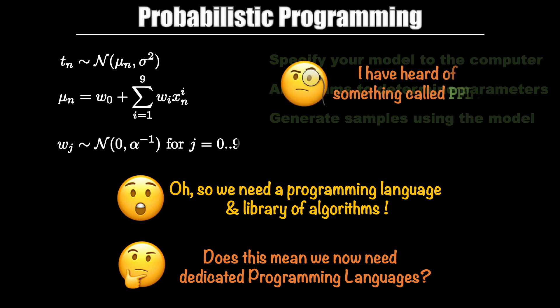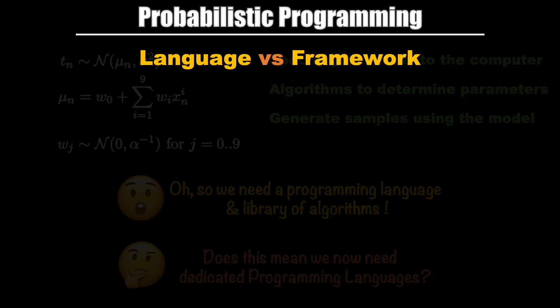In the space of probabilistic programming, one term that is often used is called PPL, which stands for Probabilistic Programming Language. But before I go any further with this term, I want to first quickly clarify the differences between programming language and a framework. I'm sure I don't need to explain what a programming language is. You also understand what a library is. A library is simply a collection of functions. That said, I have noticed that even seasoned software engineers sometimes have difficulty understanding the notion of frameworks.